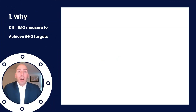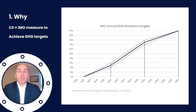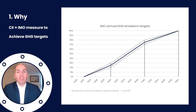Let's start with why — the bigger picture first. The International Maritime Organization has set goals to decarbonize the shipping industry towards 100% decarbonization in 2050, with intermediate goals in between. The Carbon Intensity Indicator, CII, is one of the instruments or measures in order to achieve these targets and thereby decarbonize the shipping industry.